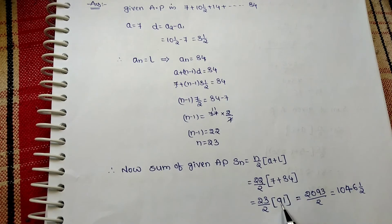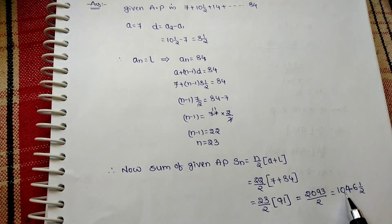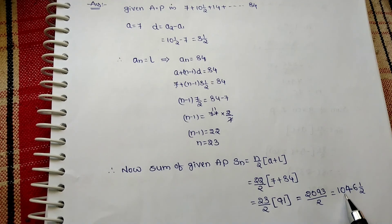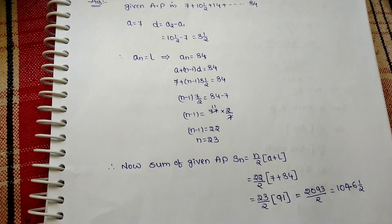84 plus 7 will be 91, and 23 into 91 equals 2093/2. That will be 1046 and 1/2. Therefore, the sum of given AP equals 1046 and 1/2. Okay.